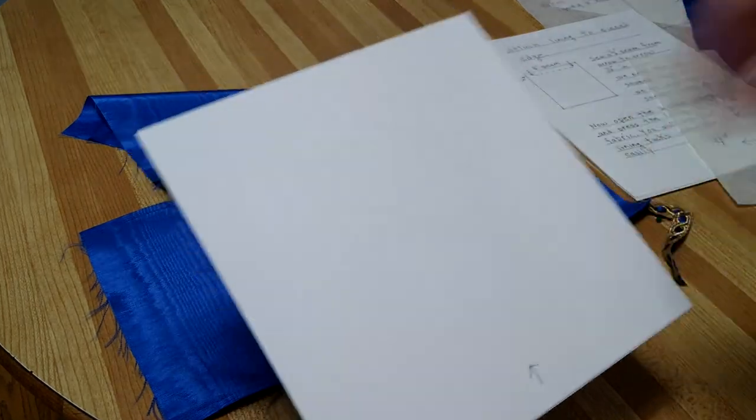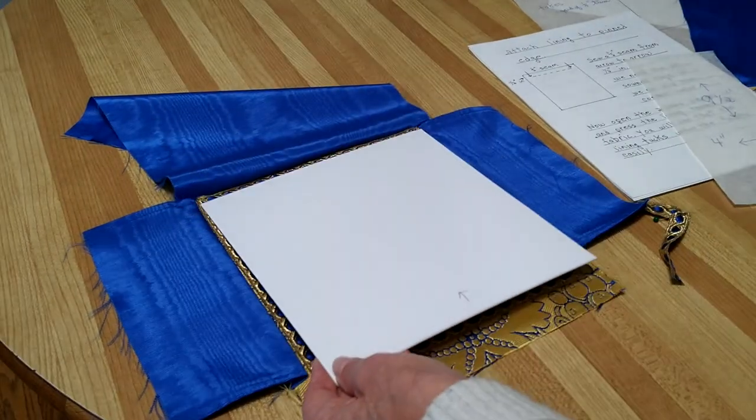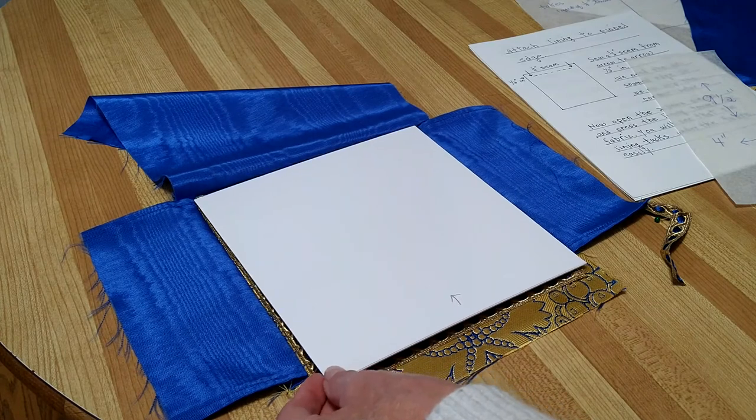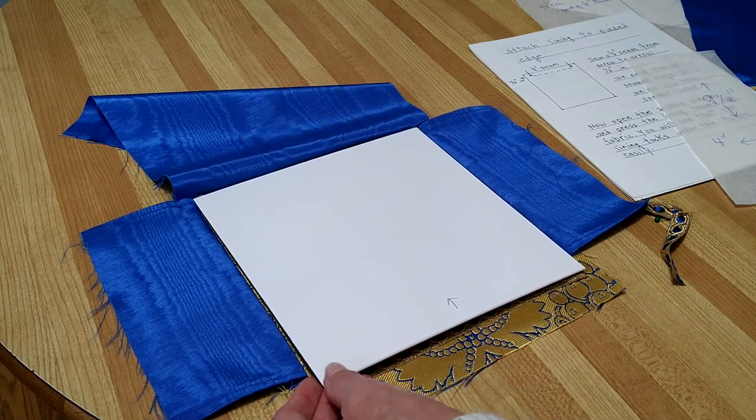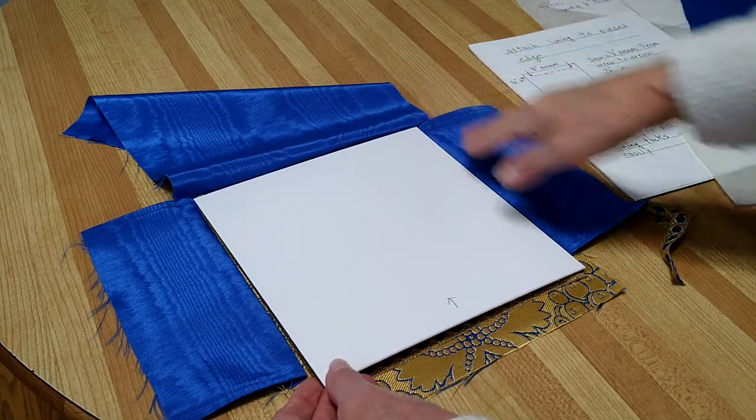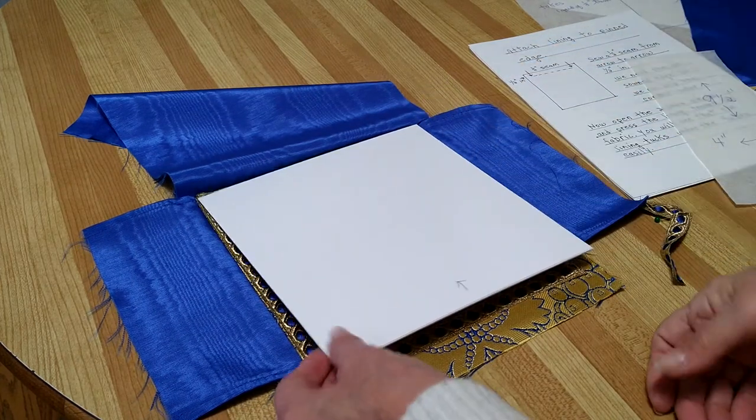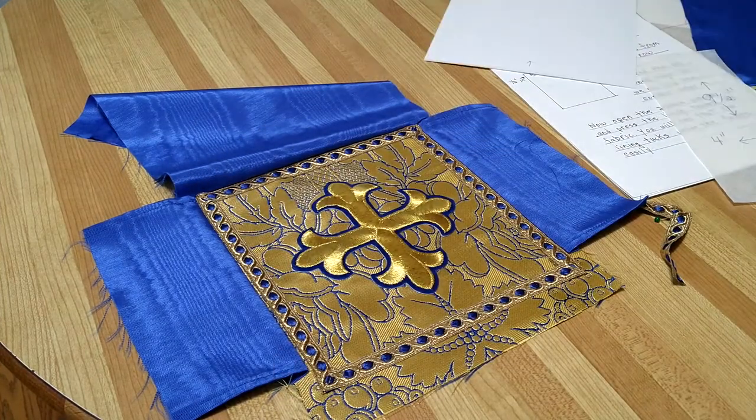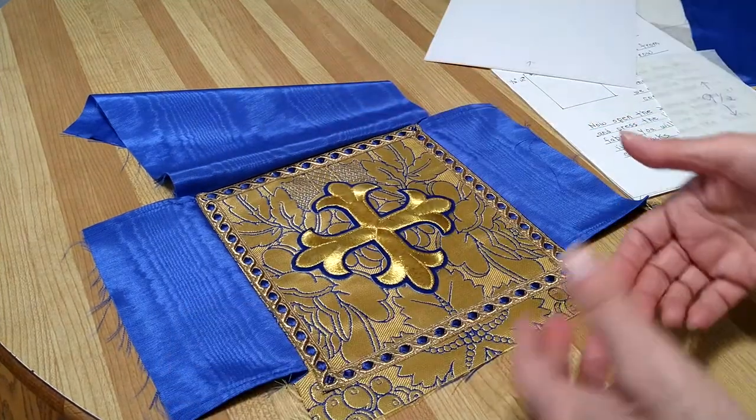Sometimes when you lay this matting on top of what you've done, you find that it's too wide. So just lay it on top and if it's too wide, it's usually like one eighth of an inch off. Because of how I sew it, right?